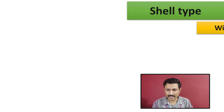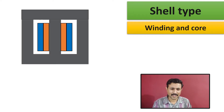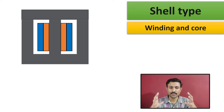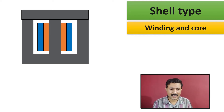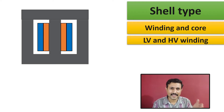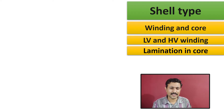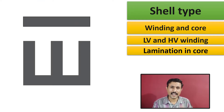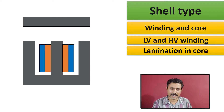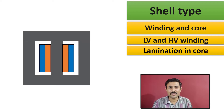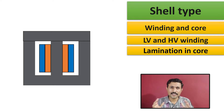Now we'll see the shell type transformer. In shell type transformer, the winding is on the inside and the core is on the outside — the opposite of core type. In shell type transformer, LV winding is inside and HV winding is outside. The lamination material used in this core is E and I shaped, so EI lamination is used in shell type transformer. Initially the LV winding is wound and then the HV winding is wound. Then E and I shapes club together to form a shell type transformer. This is what is inside the transformer; now we'll see what is on the outside.